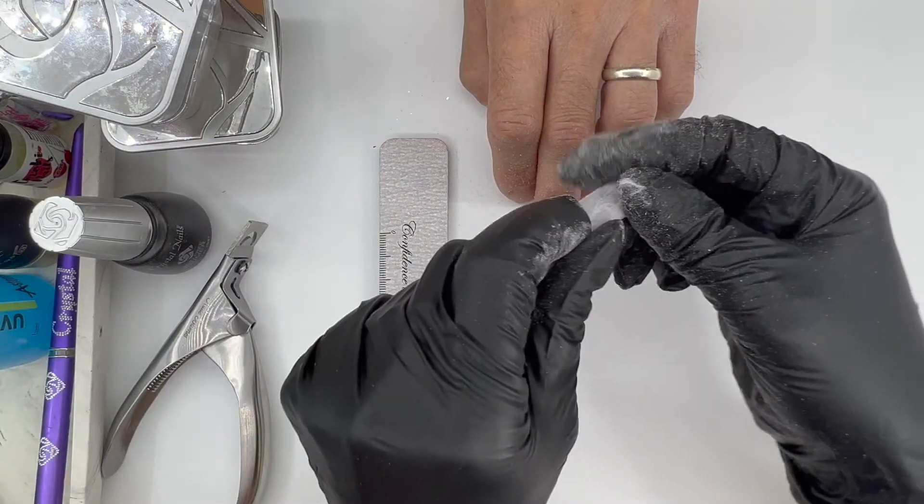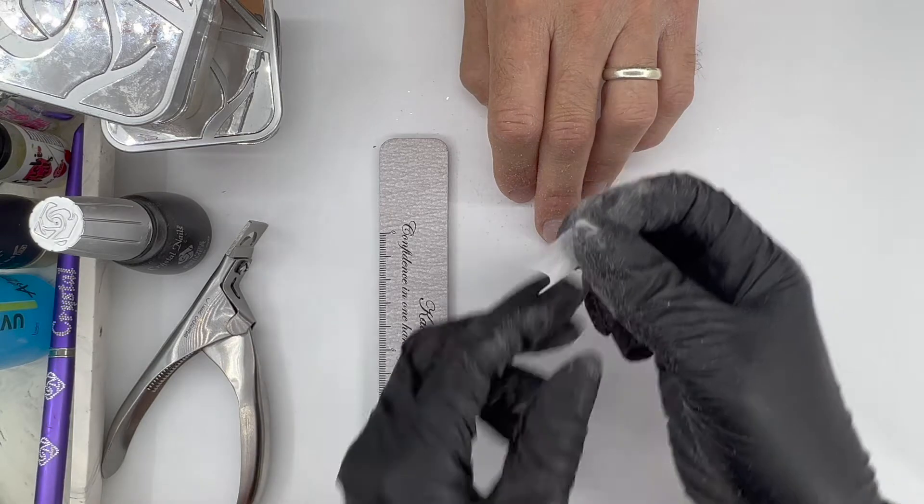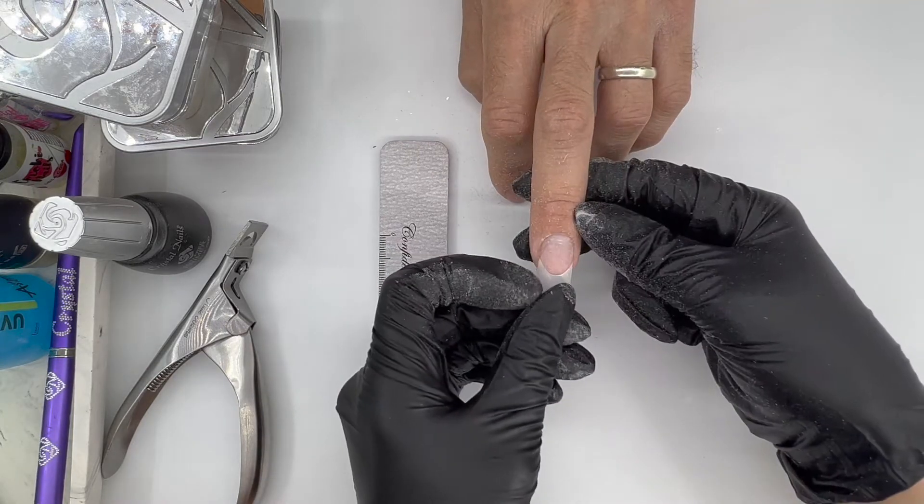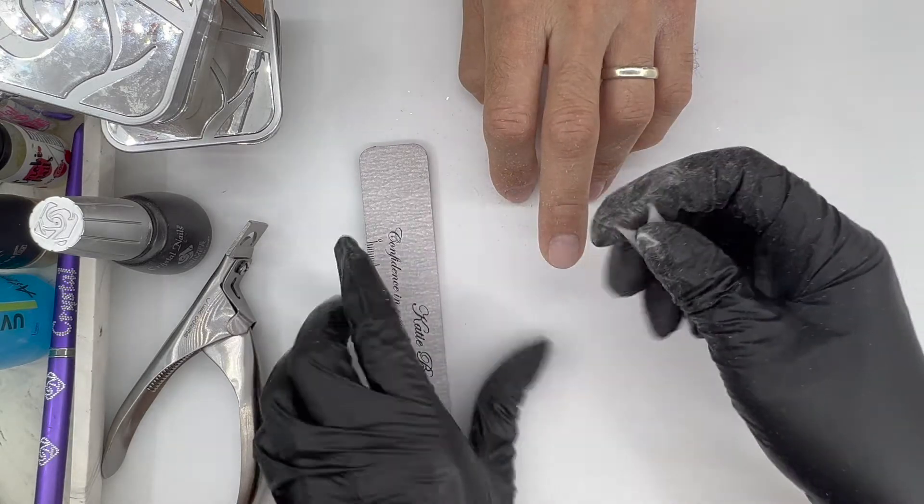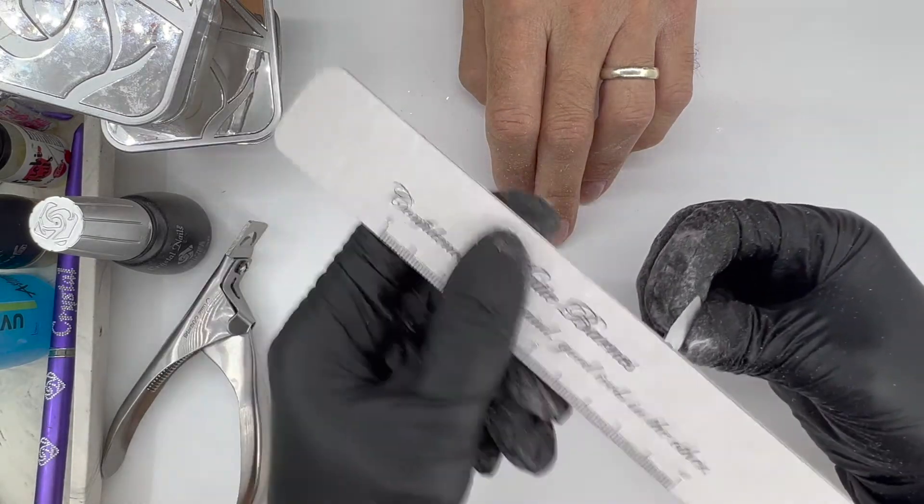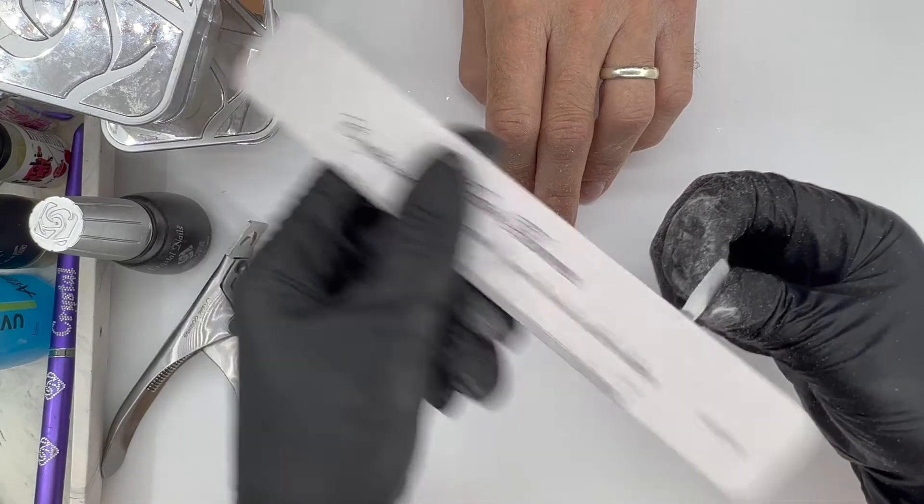The other thing you can also do is you can file that smile line deeper if you need for the application of that nail. So sometimes you will need a deeper C-curve to fit the shape of the nail. So if you need to do this, you can file that C-curve.